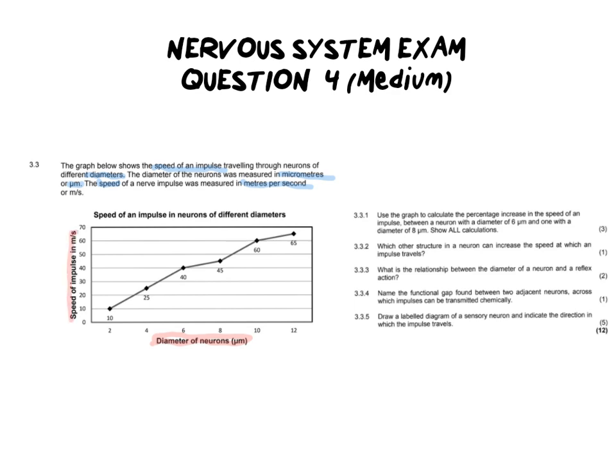At the bottom here we have the diameter of the neuron and that's the width of the neuron and then we have the speed of the impulse. As we can see the graph is increasing over time and that leads me to believe that as the diameter of the neuron gets larger, the speed increases. So that's their proportional relationship. As one gets wider the speed of the impulse gets faster and that's going to be key to understanding this diagram as well as answering the questions that follow.